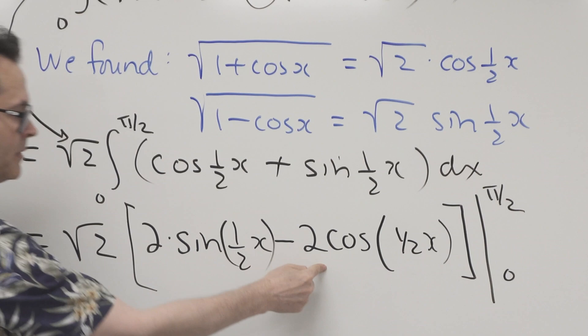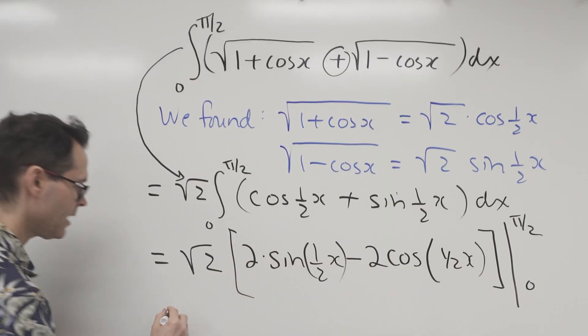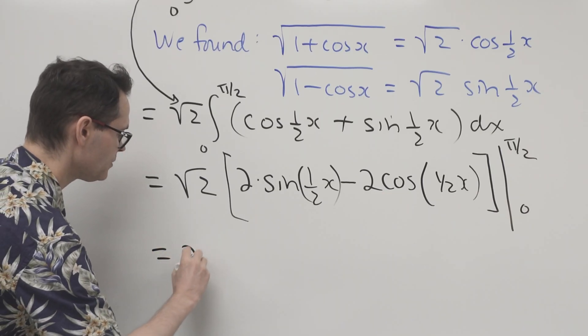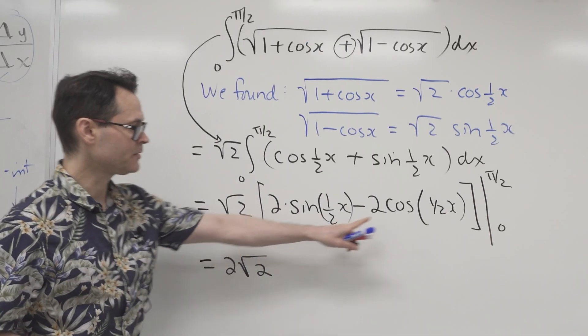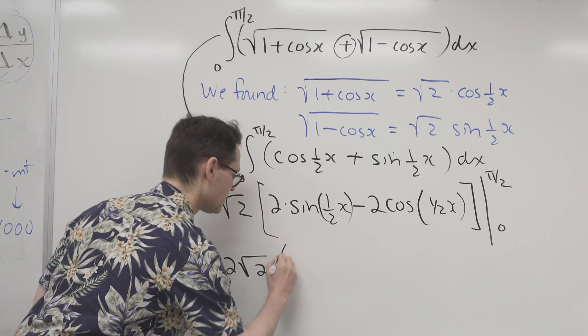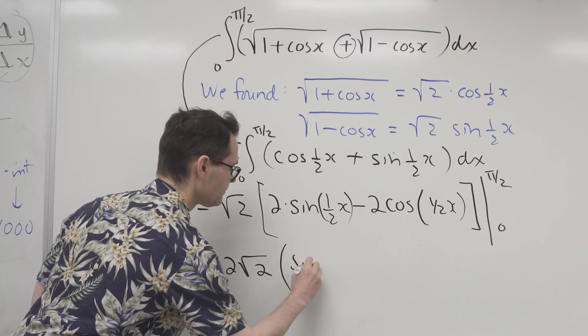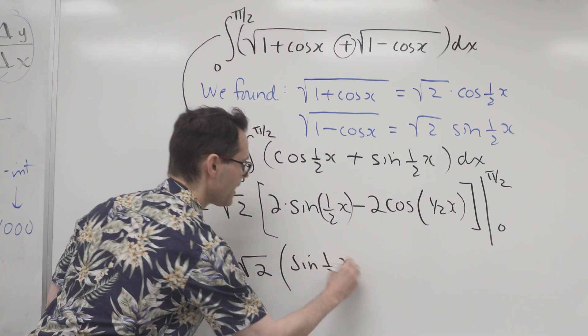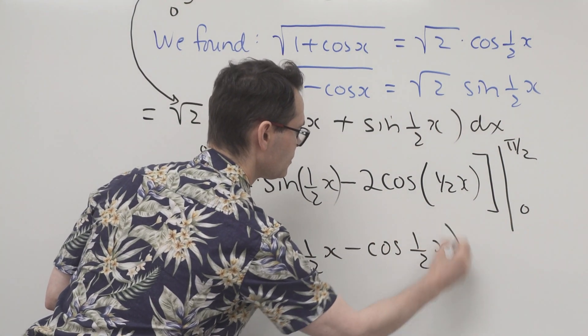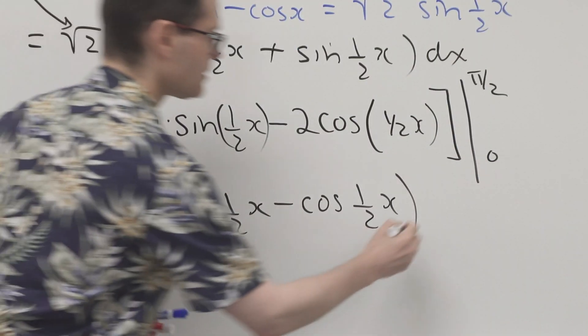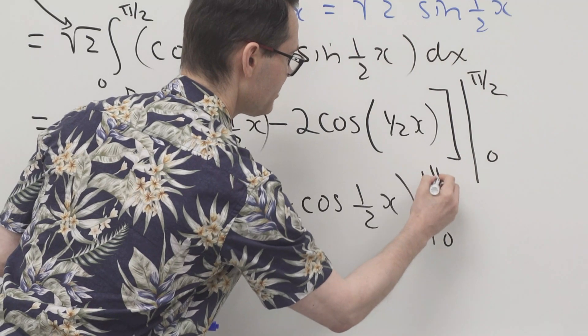And I'm going to evaluate that between 0 and pi over 2. Notice there's a 2 common to both. So what I'm going to do is pull the 2 out. So that's going to give me 2 square root 2. And then I'm just left with the sine minus the cos. So sine one half x minus cosine one half x. Again, between 0 and pi over 2.